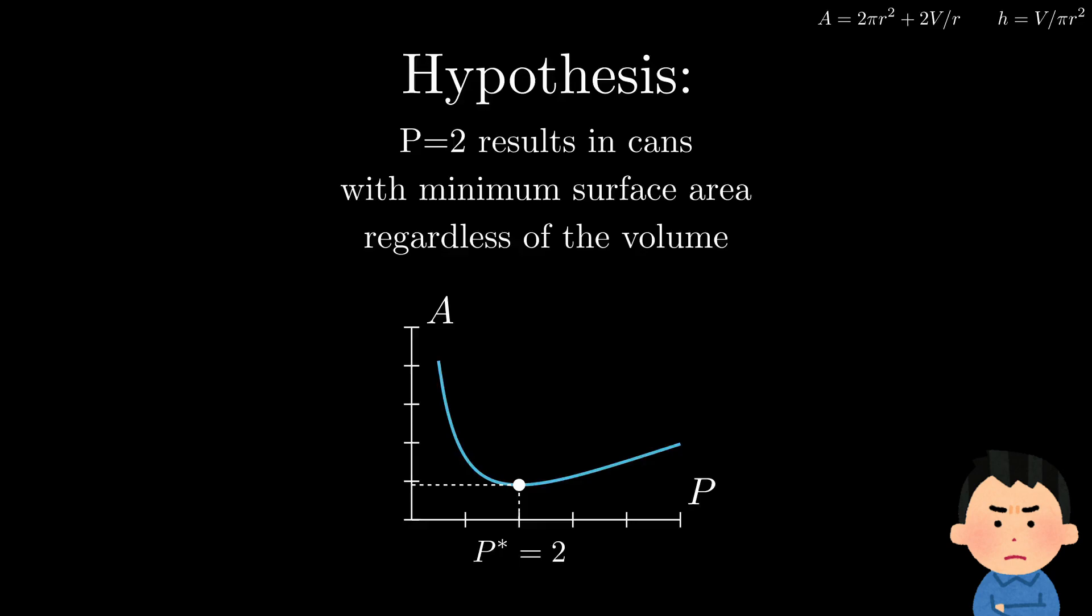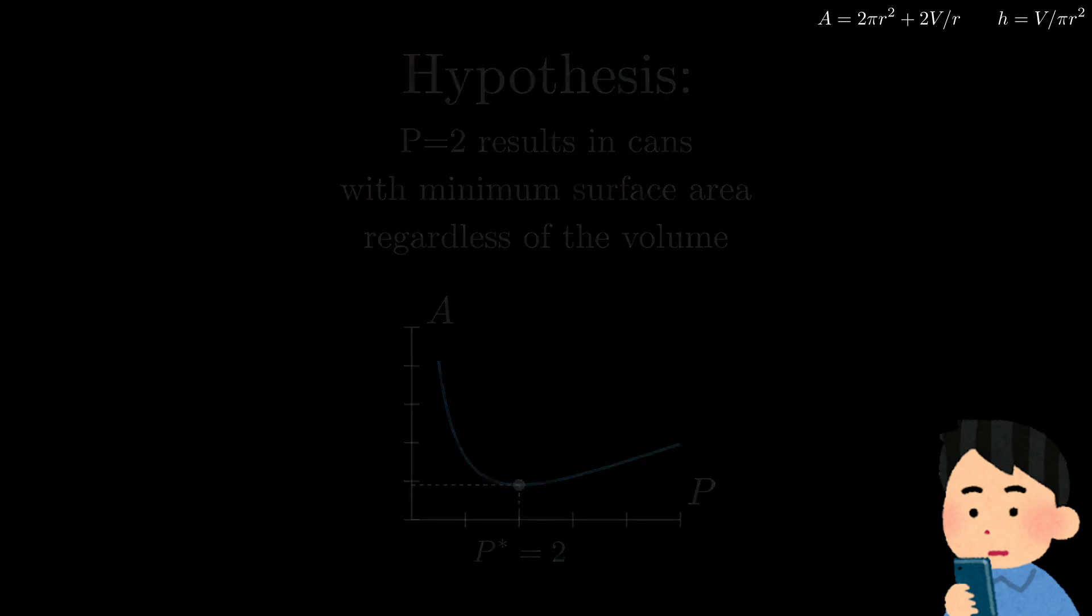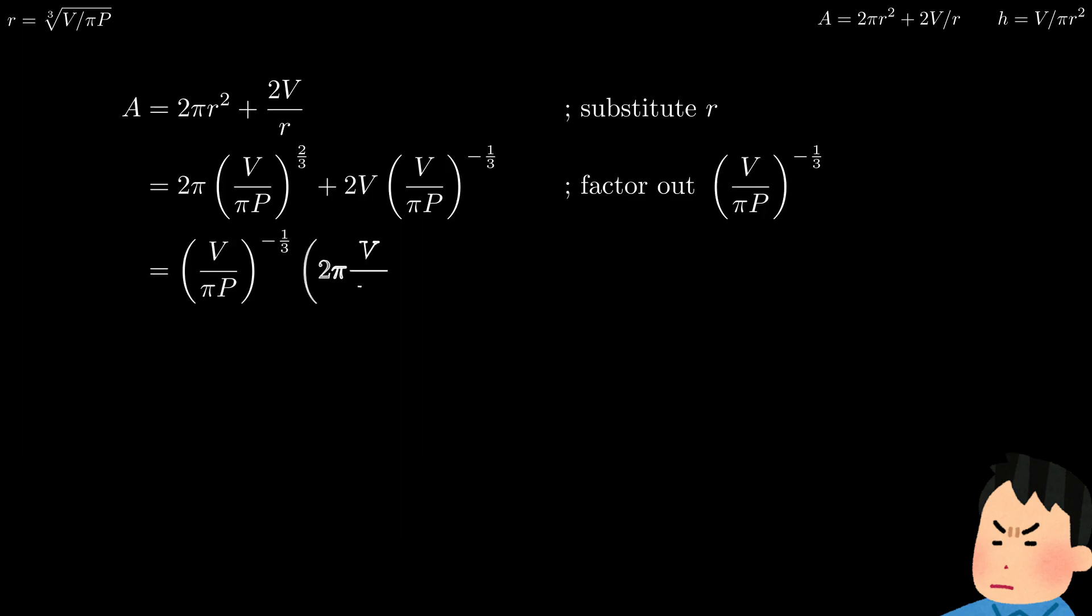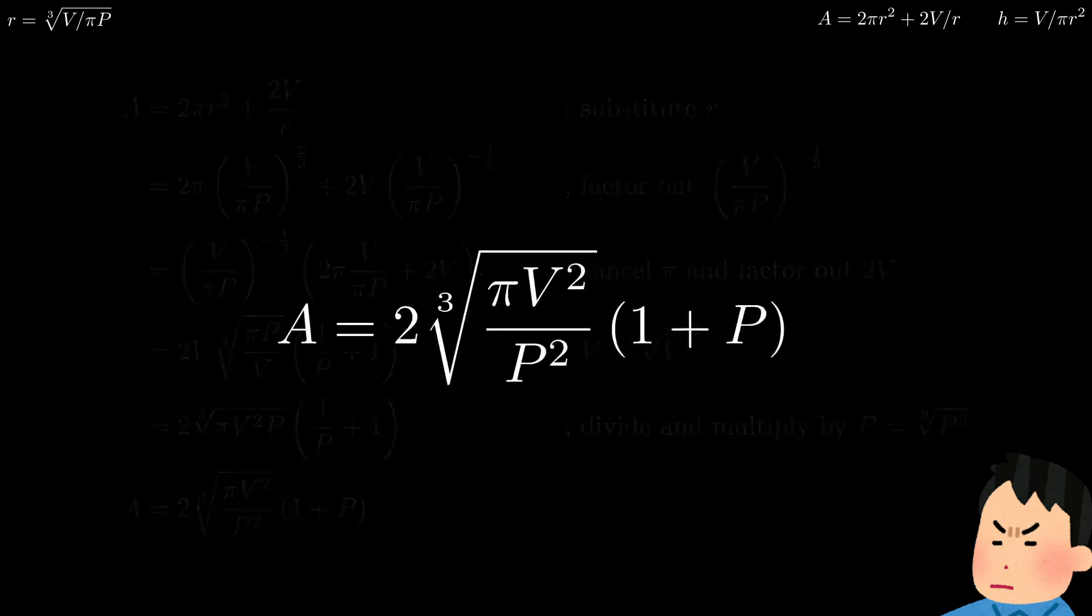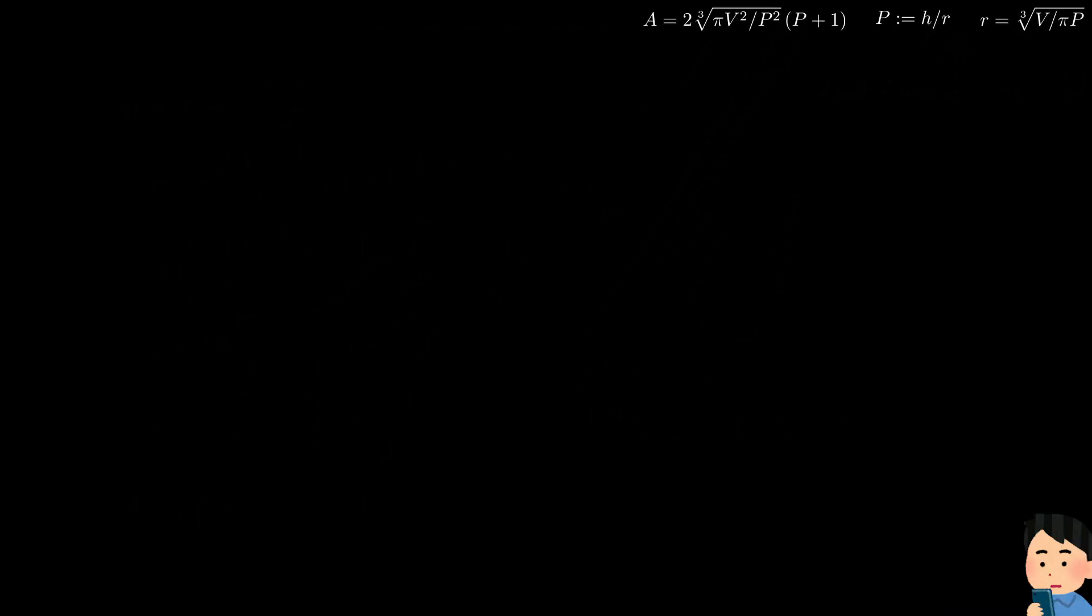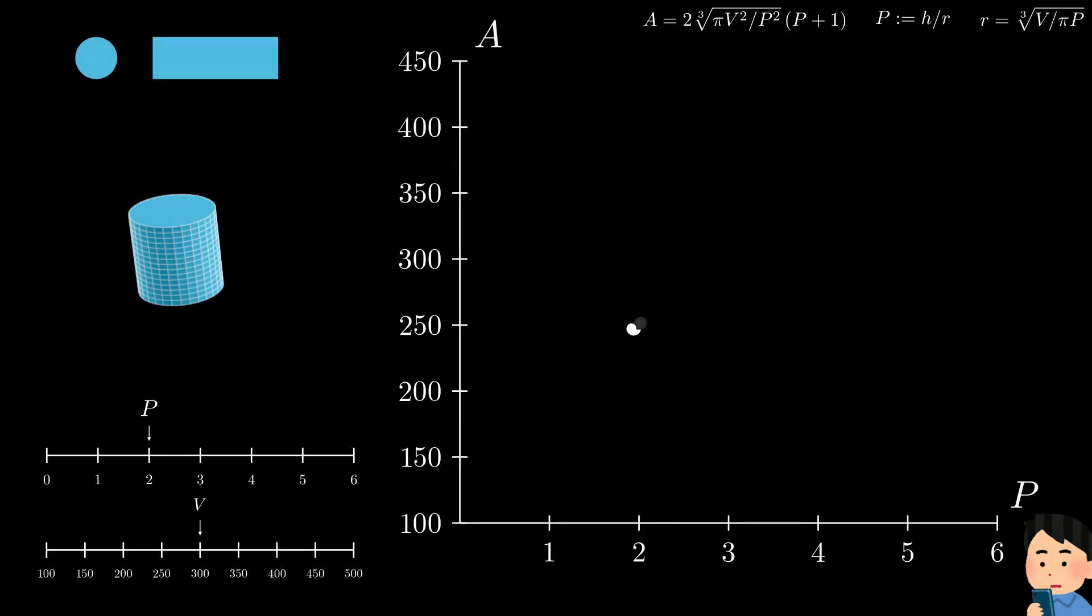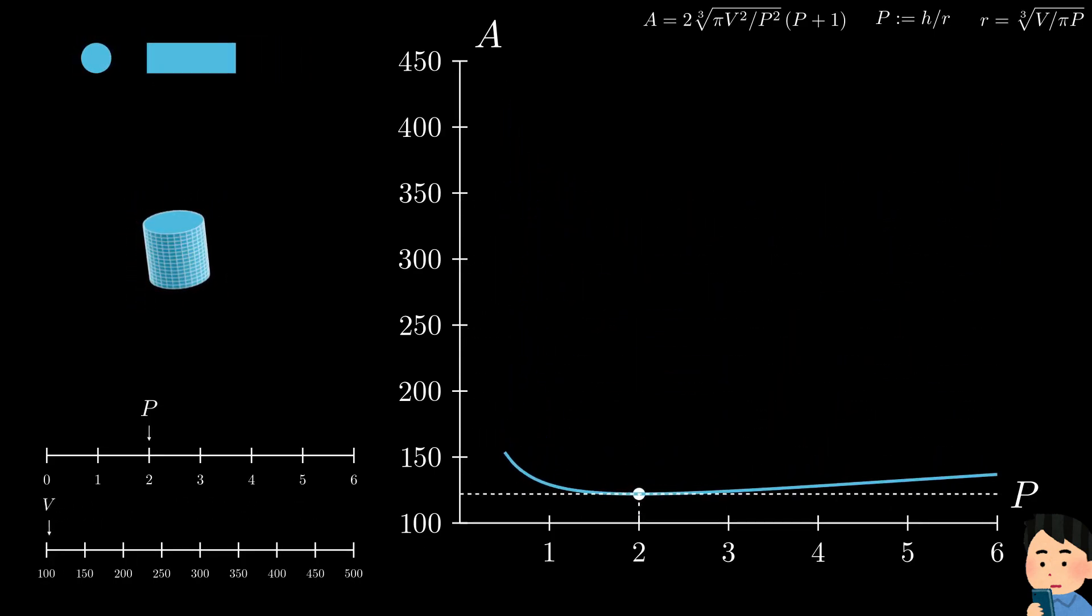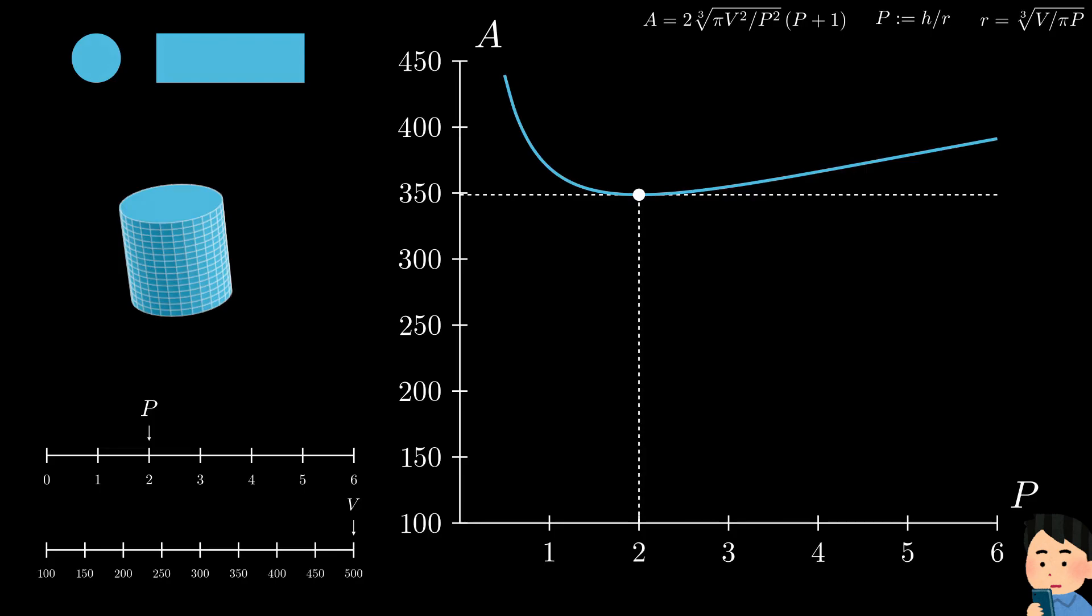But to do that, there is something we need to figure out first. In our previous experiment, we plot the radius against the surface area, right? And we did that by first writing the surface area equation in terms of radius. And now that we want to plot p against the surface area, we need to do the same. Write the surface area equation in terms of p. The easiest way to do this is to write radius in terms of p, then plug that back into the surface area equation. You can pause if you want to see the detailed calculation. And now that we have all that we need, we go back to performing a similar experiment, but this time with our new surface area equation.